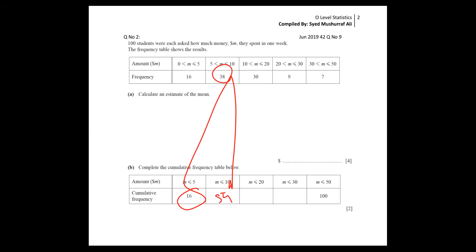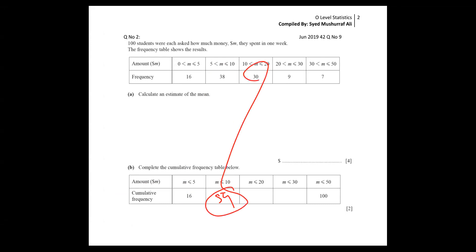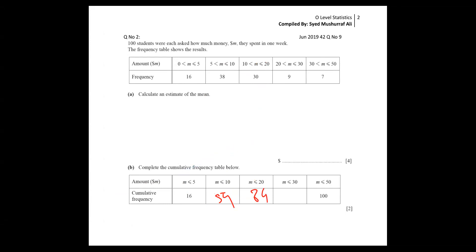Banan, any trouble, my dear? No, sir. Good. Banan, add 54 and 30 and write it down. The answer is 84. Agreed or not agreed? Yes, sir. Agreed.